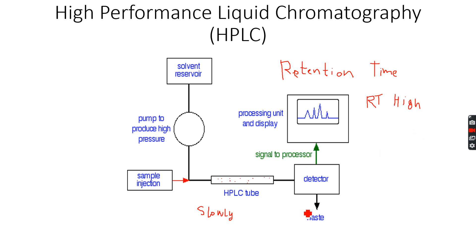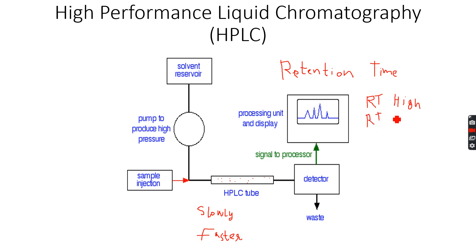On the other hand, if we have a polar solute, it will dissolve more in the mobile phase because like dissolves like. Since it is dissolving more in the mobile phase it will travel faster, take less time to reach the detector, and therefore have a very low retention time.